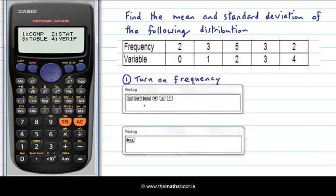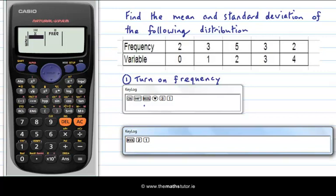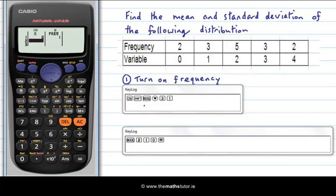one for one var and there we have our table set up. And now we can enter the data. So the first variable is zero and hit equals. You will notice that the frequency defaults to one. I can go in and change that afterwards. So let's put in my second variable which is one and equals and then two and equals and three and equals and four and equals.